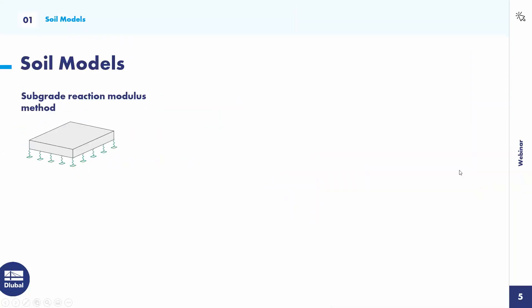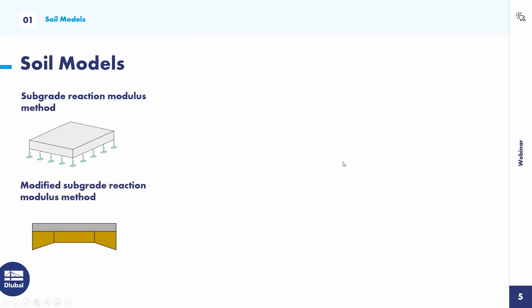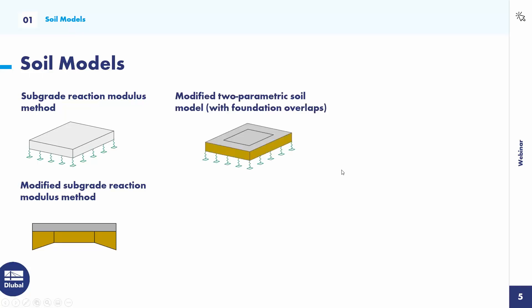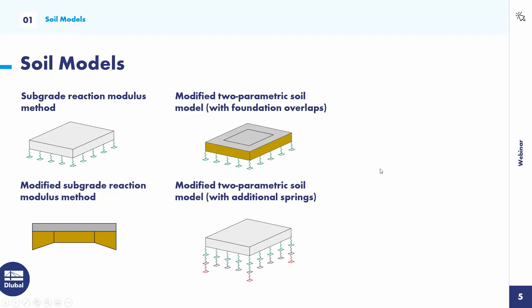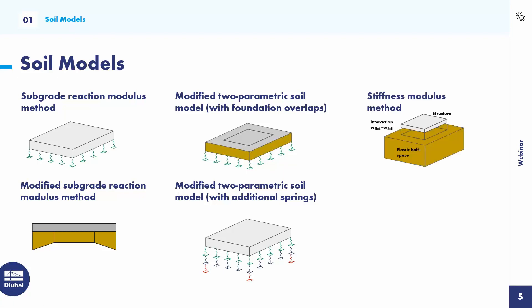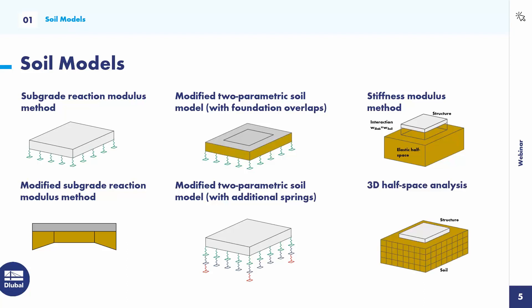The soil models covered are: first the subgrade reaction modulus method, the modified subgrade reaction modulus method, the modified two-parametric soil model with foundation overlaps, the modified two-parametric soil model with additional springs, the stiffness modulus method, and the 3D half-space analysis.